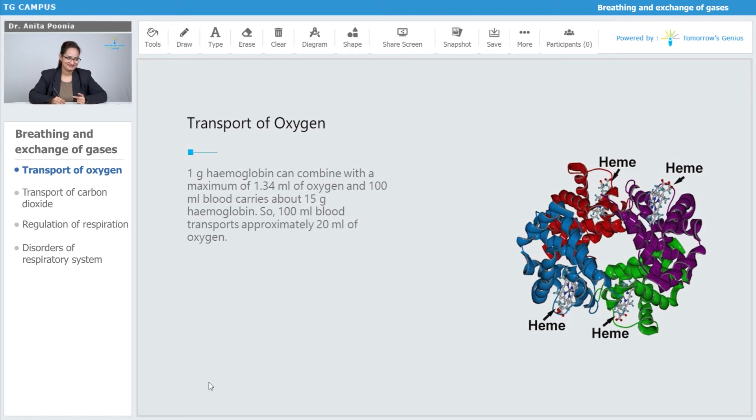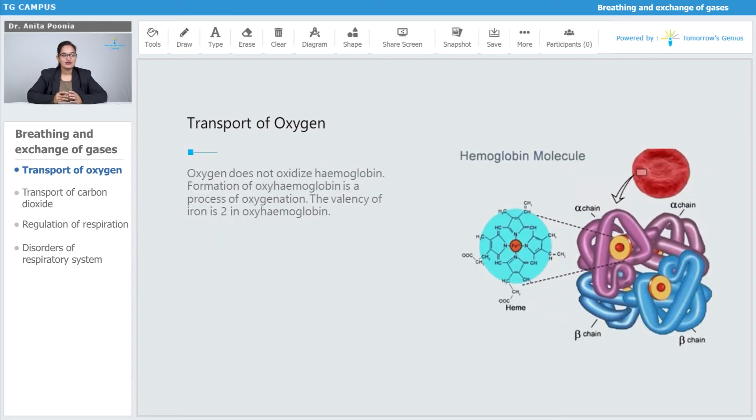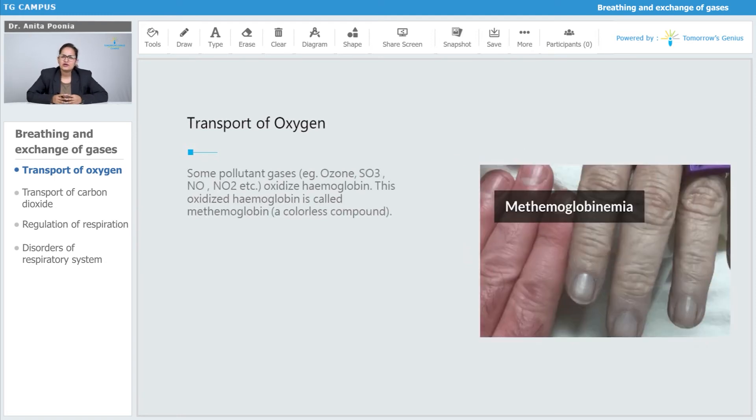Oxygen does not oxidize hemoglobin. The formation of oxyhemoglobin is a process of oxygenation, and the valency of iron is 2+ in oxyhemoglobin.